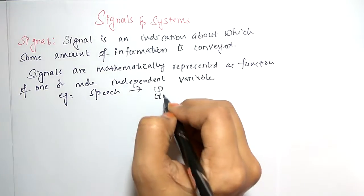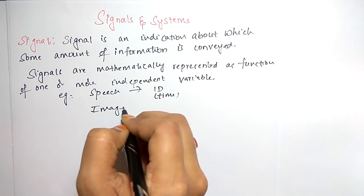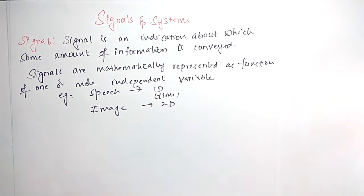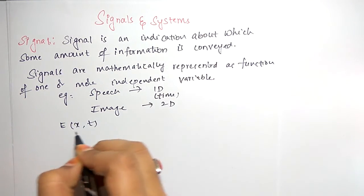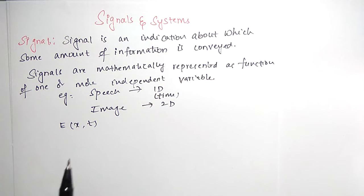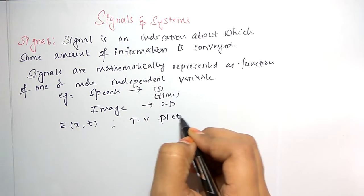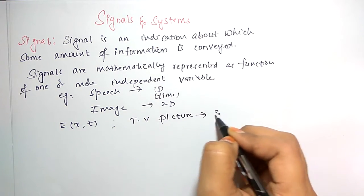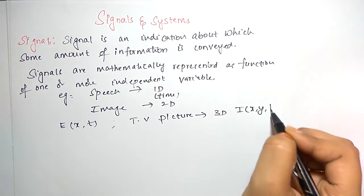If you take an image, it is two-dimensional. If we take a TV picture, it is three-dimensional: x, y, t.